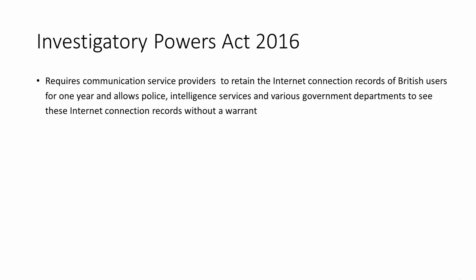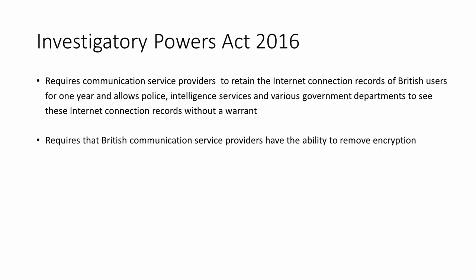This refers to records of which websites were visited, but not the particular pages that were viewed, and not the full browsing history. Arguably, the connection records are all that you need to incriminate someone. Communication service providers must also hand over this information to the police, the intelligence services, or various government departments on demand and without the need for a warrant from a court of law. The Investigatory Powers Act also requires that British communication service providers have the ability to undo any encryption that they provide for their customers — they must make sure they can still see their customers' secret messages. However, any back door put in place for law enforcement is a vulnerability that can be exploited by criminals.